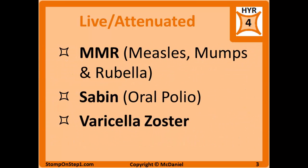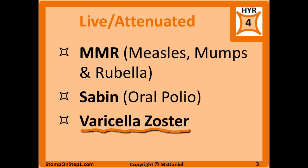Here are the most important examples of this vaccine type for the USMLE Step 1 exam. The MMR vaccine covers measles, mumps, and rubella — all examples of live attenuated vaccines. There's the Sabin vaccine for polio, which is the oral form. It's not used in the US much anymore because of the rare mutation risk where it can cause polio in the person being vaccinated, but it's still used in some developing countries because it can be given orally and is easier to distribute with poor healthcare infrastructure. There's also the varicella zoster vaccine, or chickenpox vaccine.